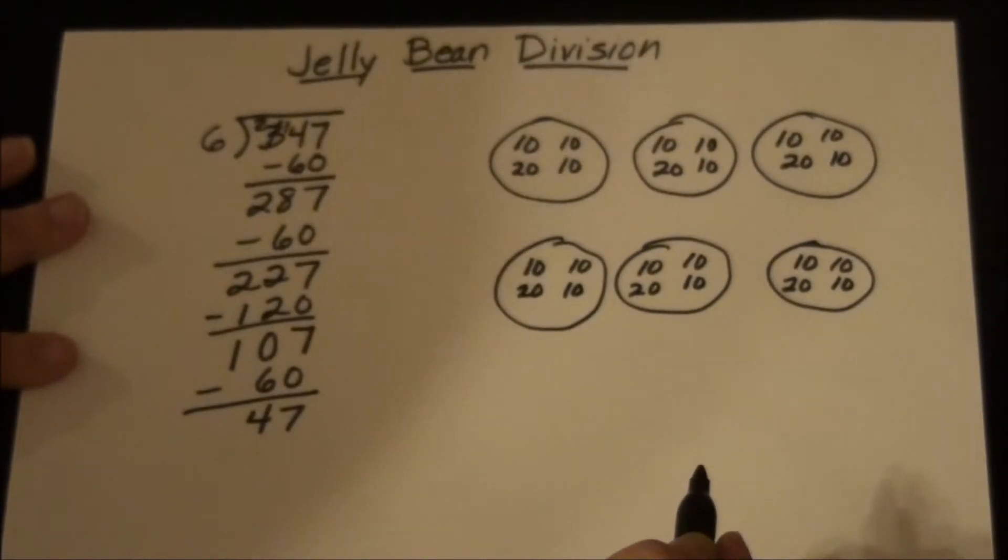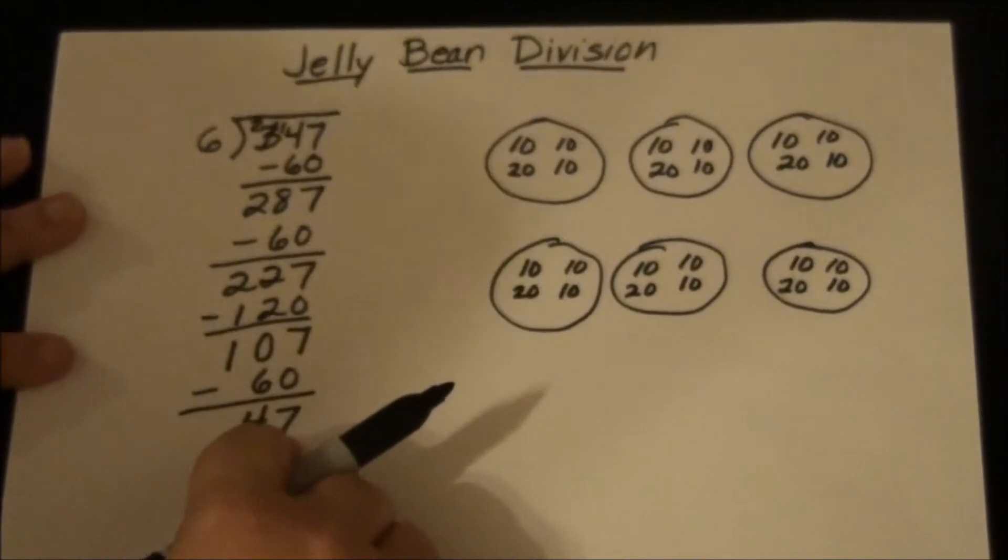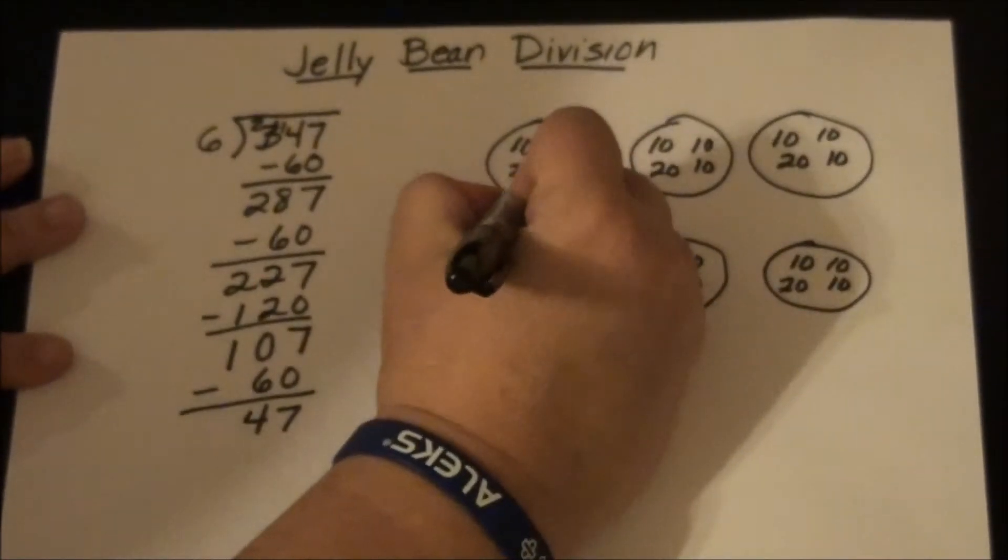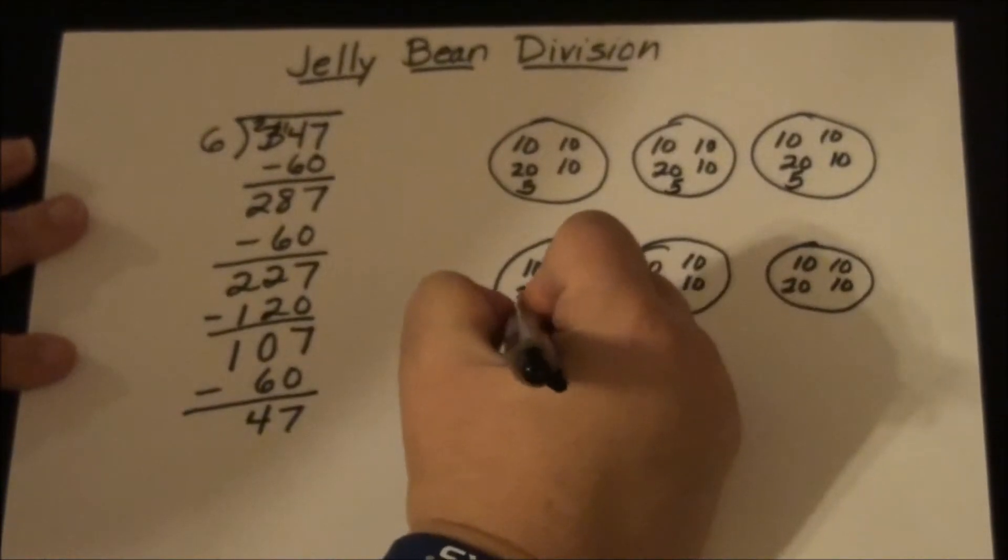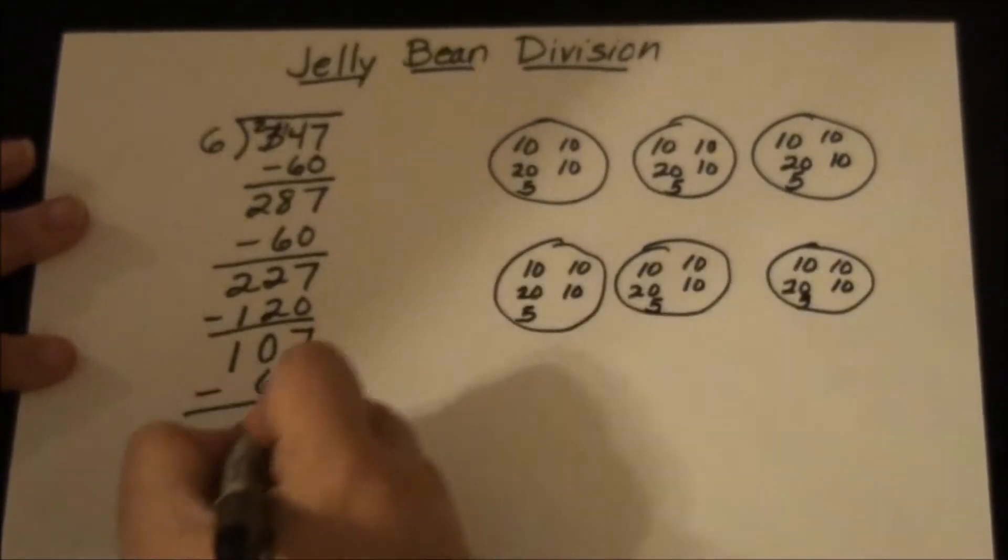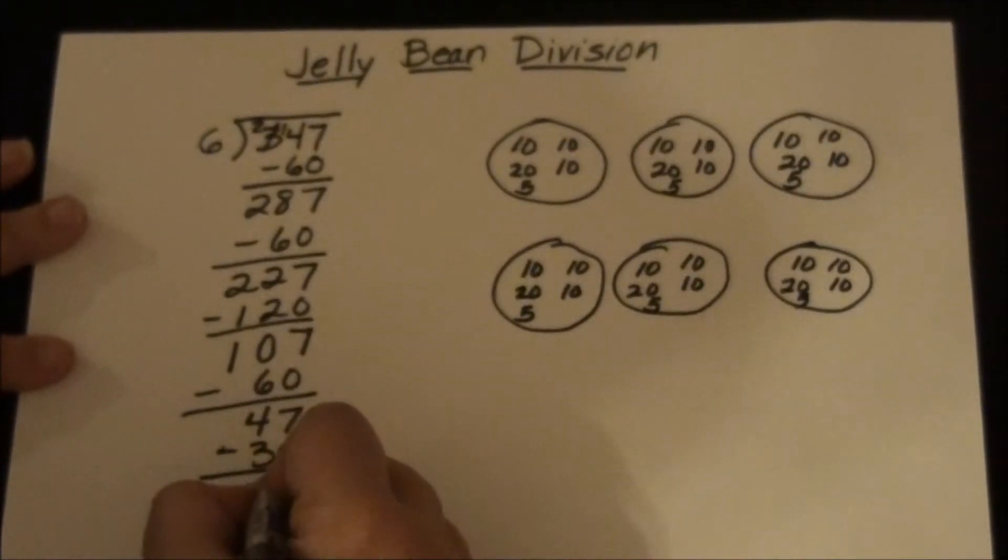And so now I'm going to try 5s because I know if I do 10s, it's going to add up to 60 and that's going to be too much. So I'm going to do 5s: 5, 10, 15, 20, 25, 30. So now I'm going to subtract 30. So now that's 17.